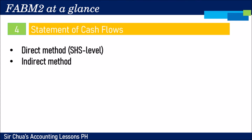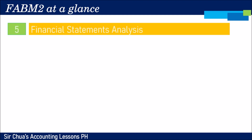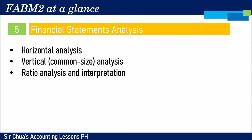After learning to prepare financial statements, we will analyze them using different techniques. In FABM2, we will cover horizontal analysis, vertical analysis, and ratio analysis with interpretation of the ratios. Financial statements analysis is a technique for managers to understand how a company performs — whether it is liquid, solvent, or profitable.